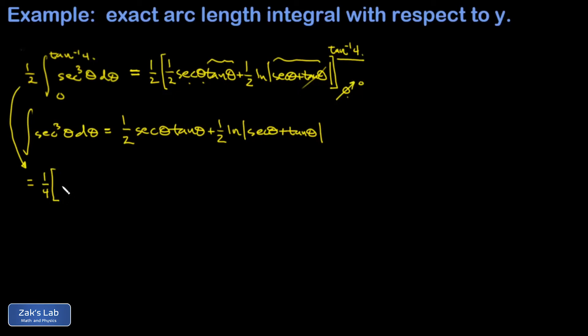So all I'm concerned with here is subbing in the upper limit and I get the secant of the angle whose tangent is four multiplying the tangent of the angle whose tangent is four. Well, that's just four plus a one half natural log of the absolute value of the secant of the angle whose tangent is four plus again, the tangent of the angle whose tangent is four and that's just four. So secant of the inverse tangent of four, that's what we need our triangle for.